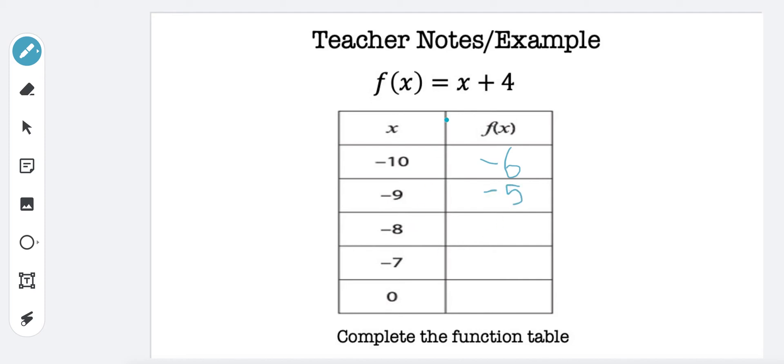And if I plug in negative 8 in for x, negative 8 plus 4 is negative 4. If I plug in negative 7 for x, negative 7 plus 4 is negative 3.